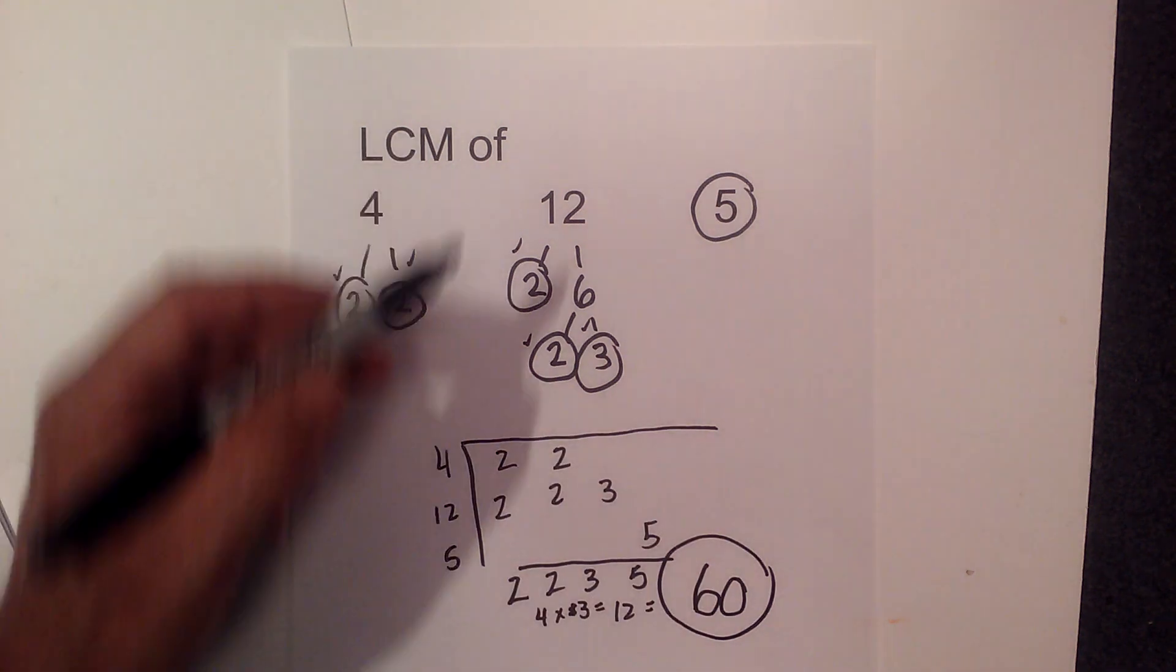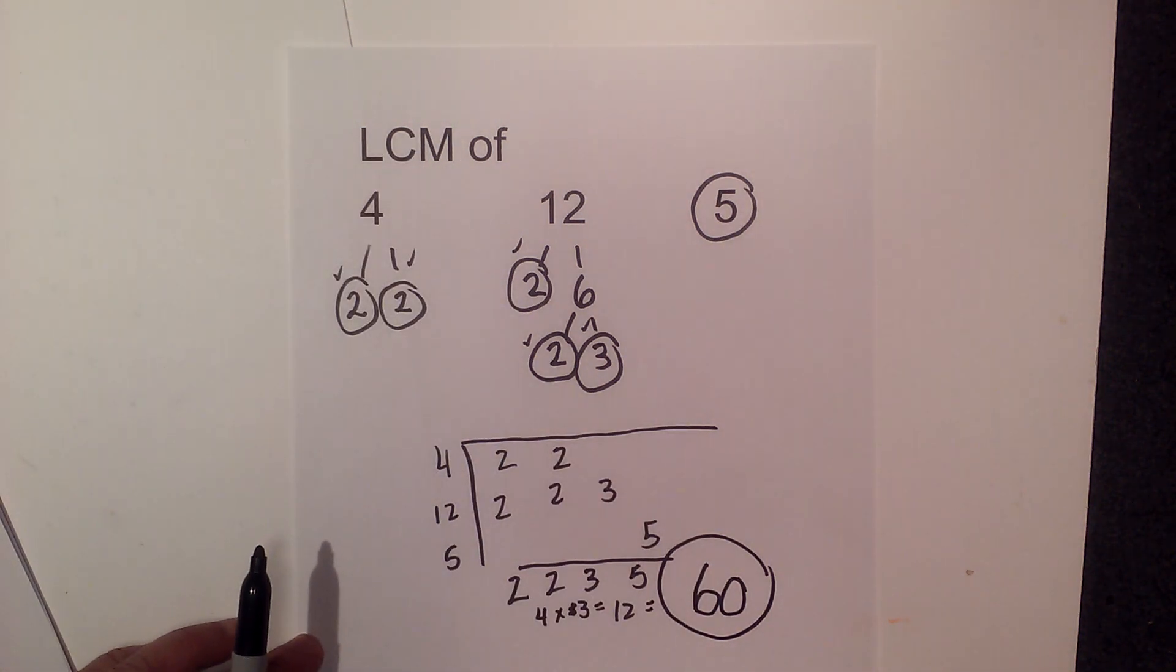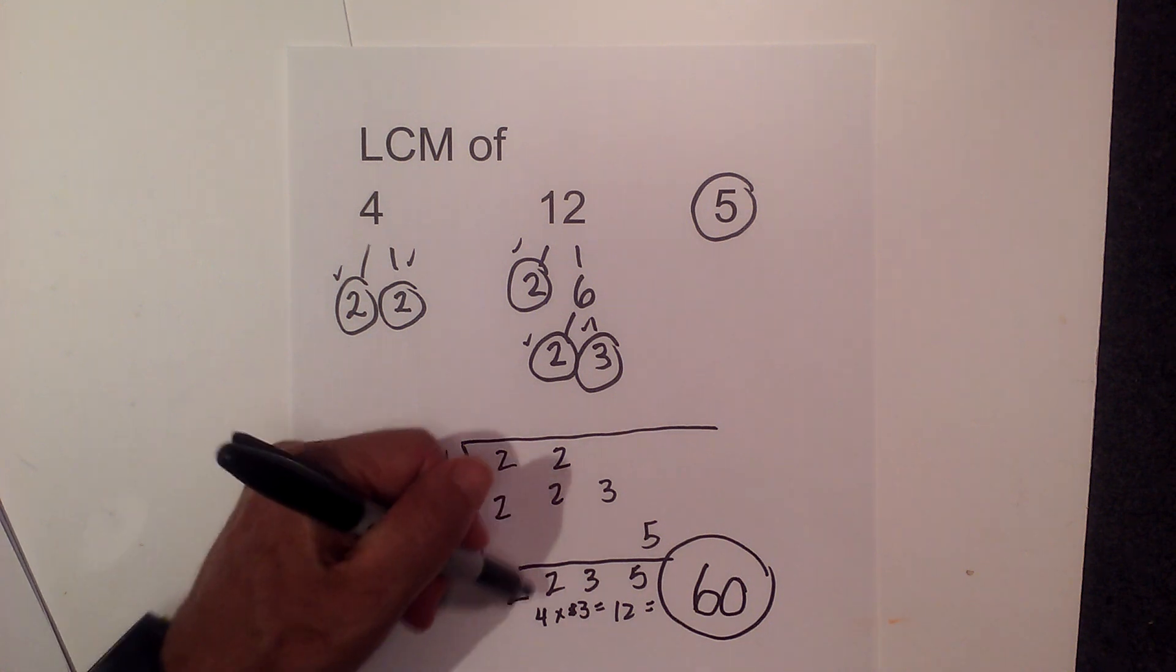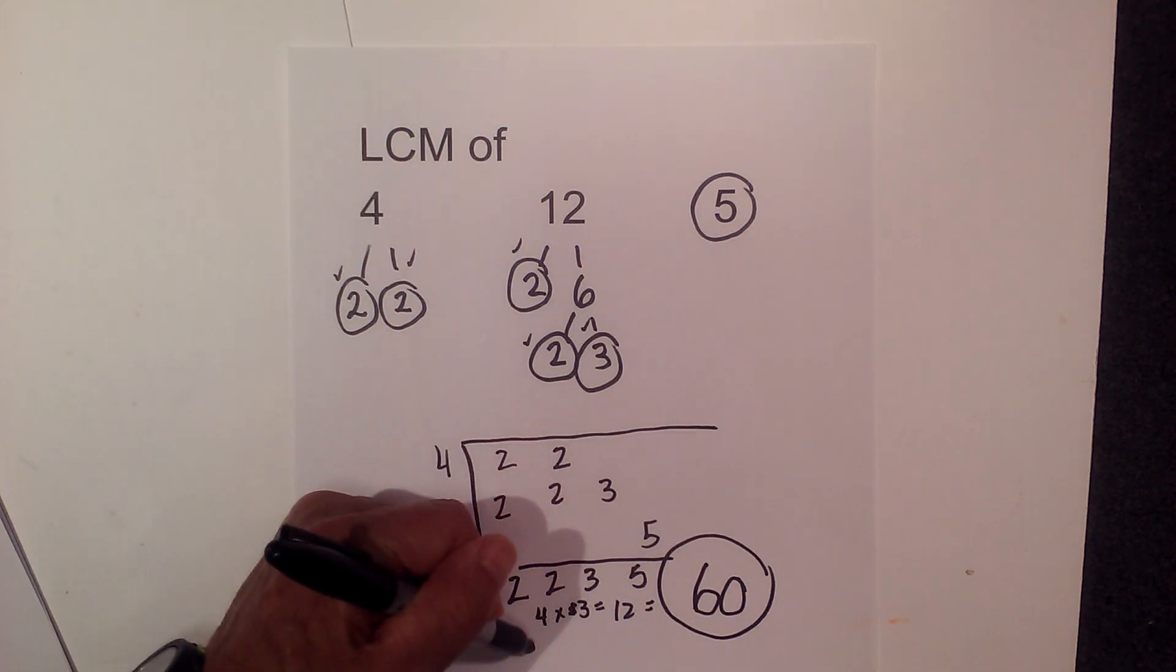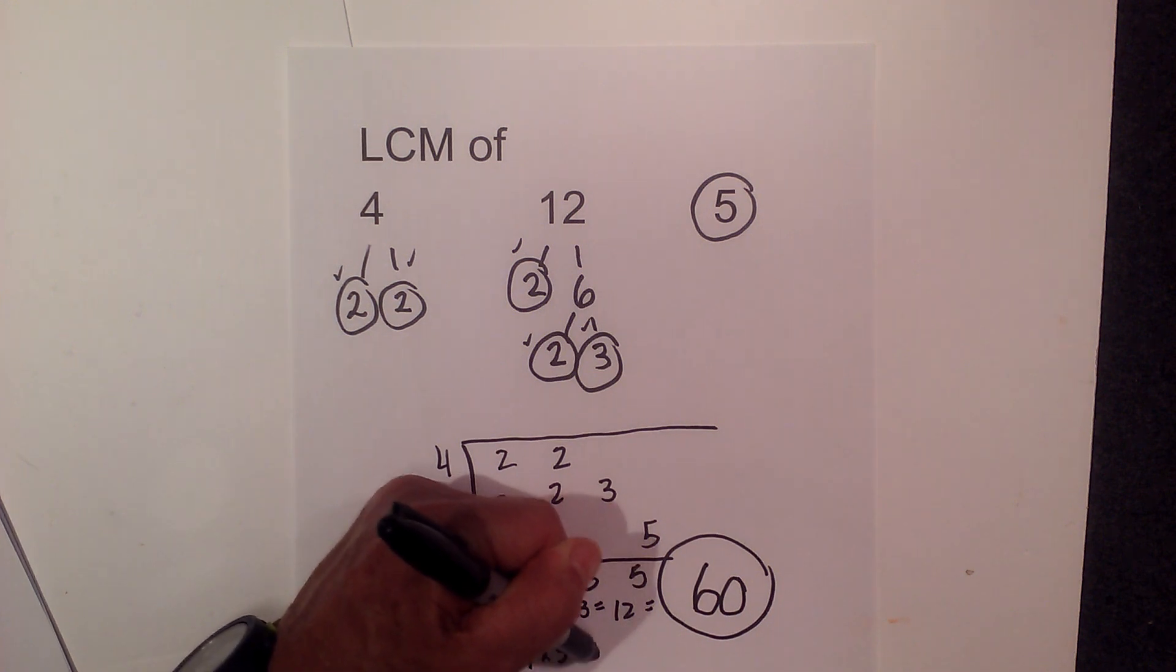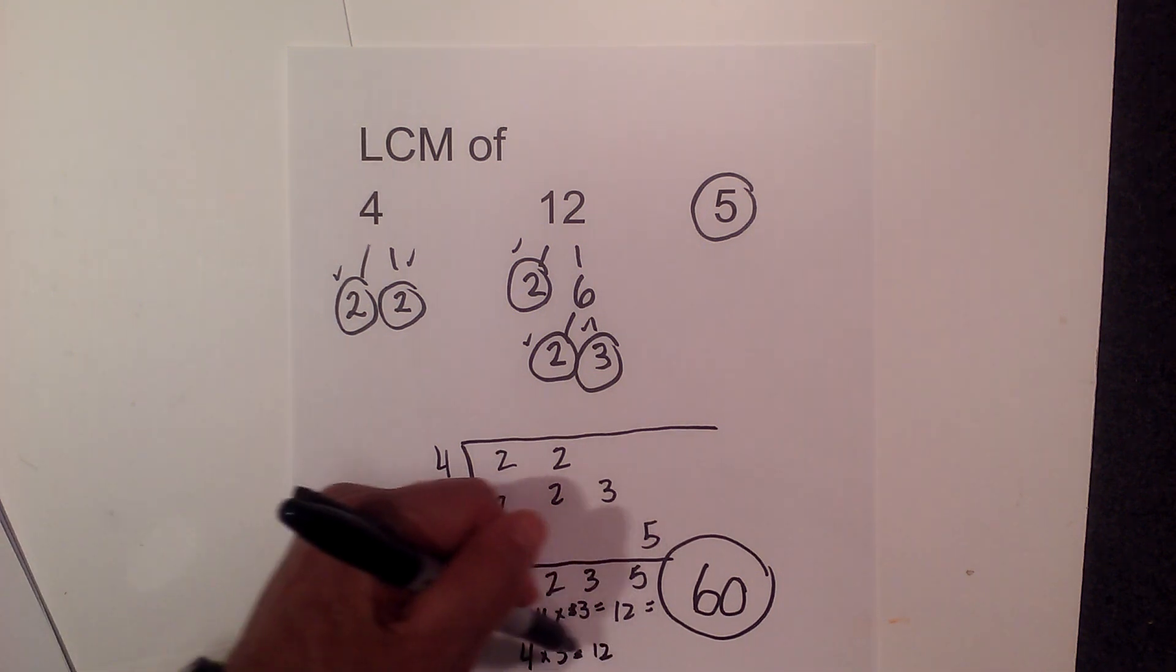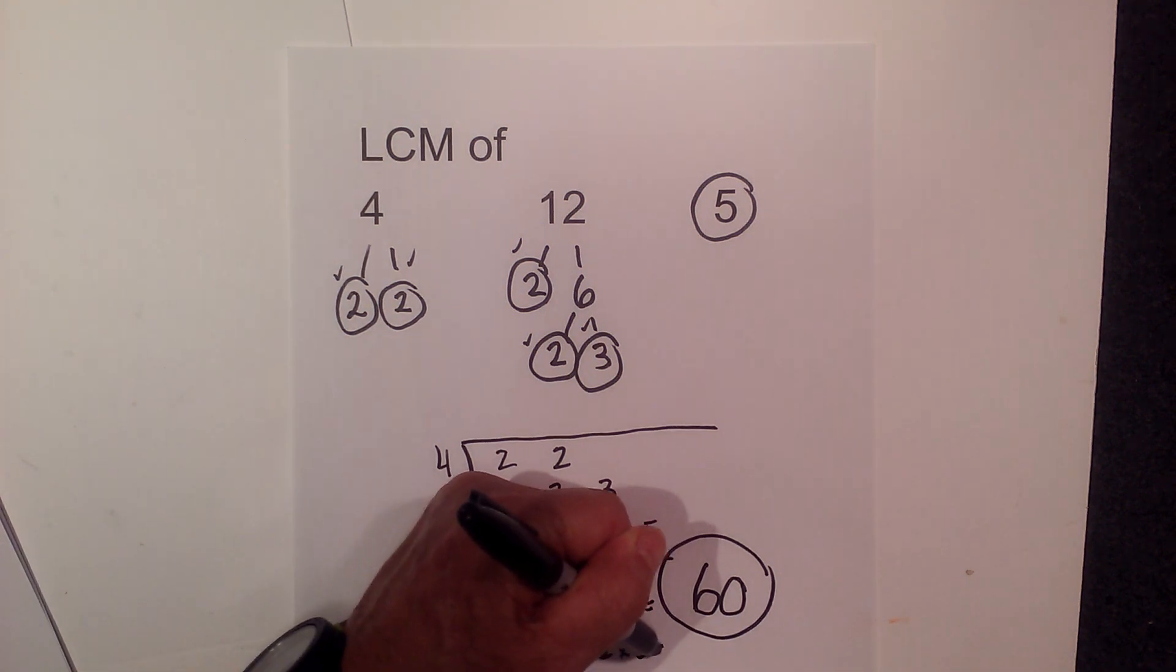So the least common multiple of 4, 12, and 5 is 60. I'm gonna go through this one more time. We have 2 times 2 is 4, 4 times 3 equals 12, and then 12 times 5 equals 60.